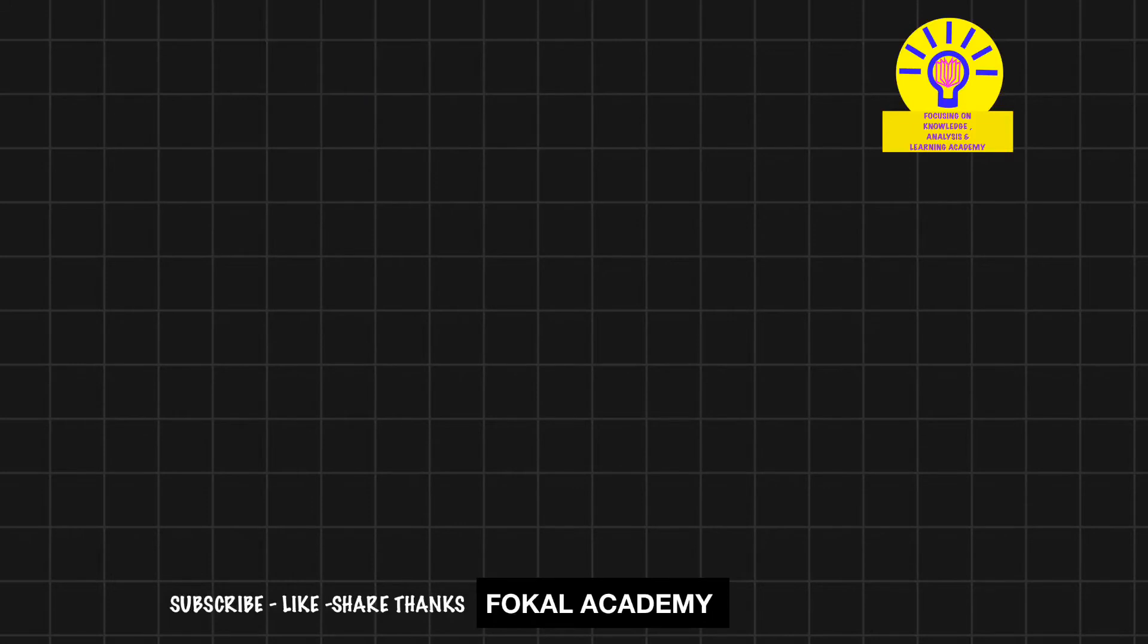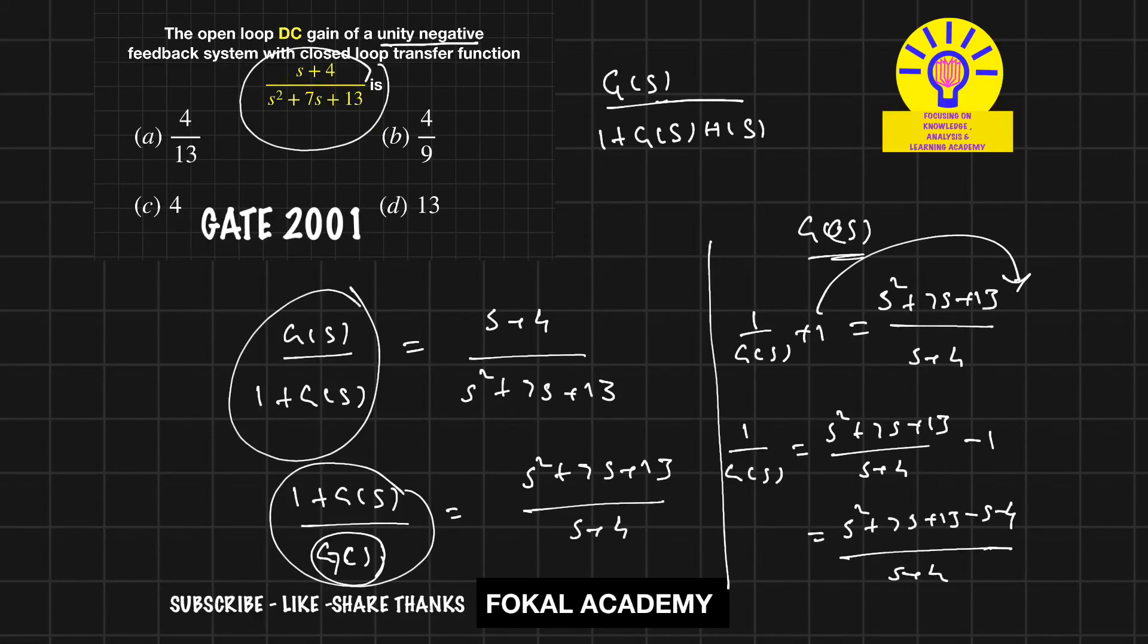From this we will get 1 by G(s) equals s squared plus 7s minus s is 6s, and 13 minus 4 is 9.